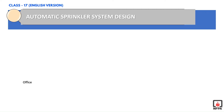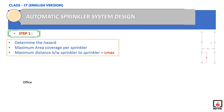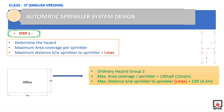Step 1: Based on the building application — in this example, an office — the occupancy hazard classification must be identified along with the maximum area covered by one sprinkler and the maximum distance between sprinklers. Our office has stockpiles of 10 feet, which classifies it as ordinary hazard group 2. The maximum area covered per sprinkler is 130 square feet as per NFPA 13, and the maximum distance between sprinklers is 15 feet (approximately 4.5 meters) per NFPA 13 requirements.